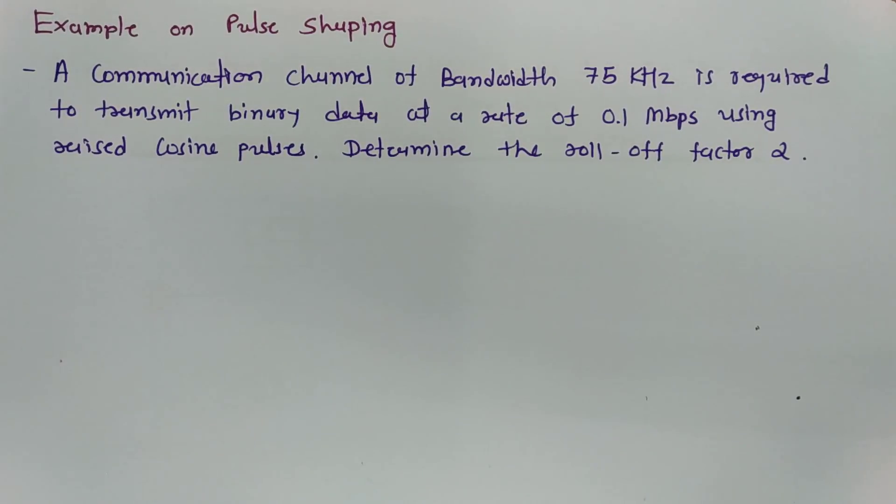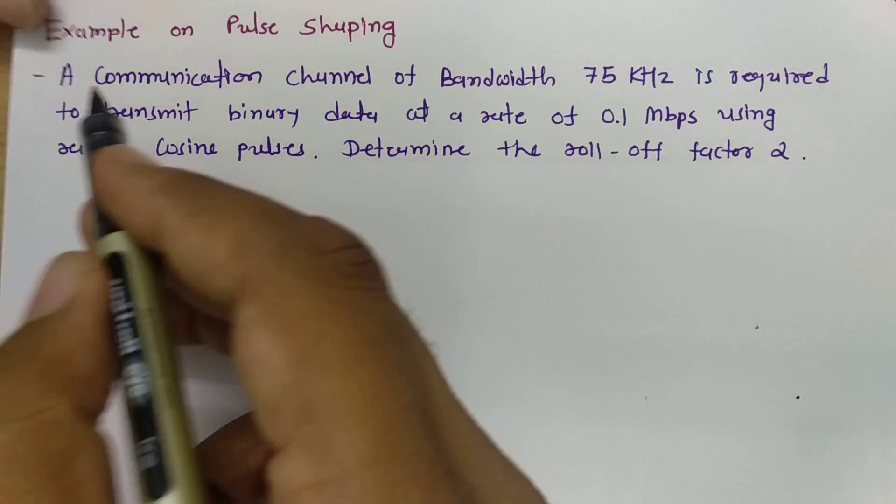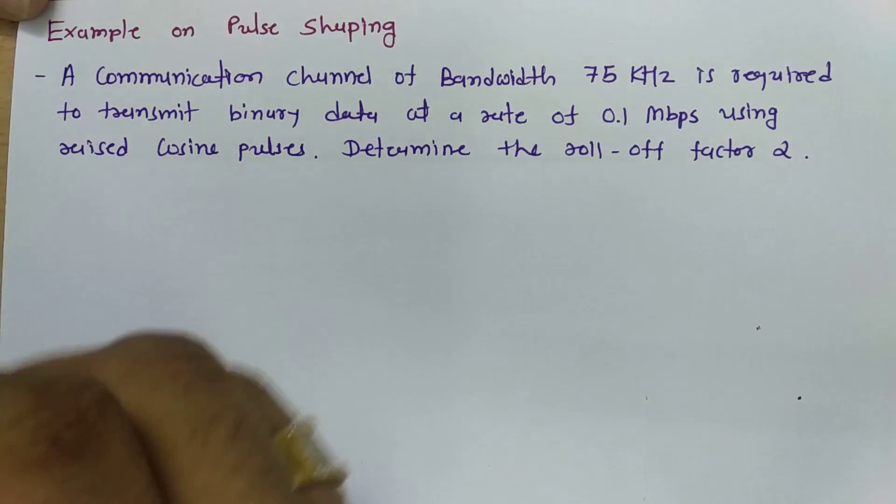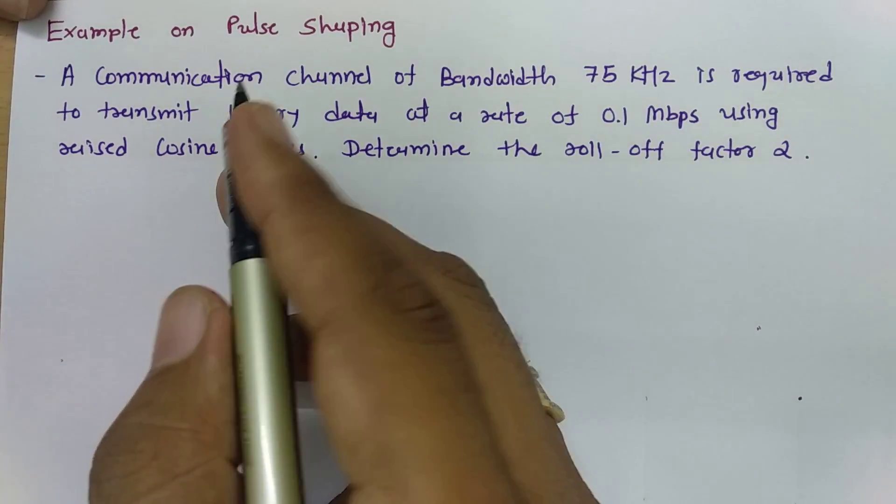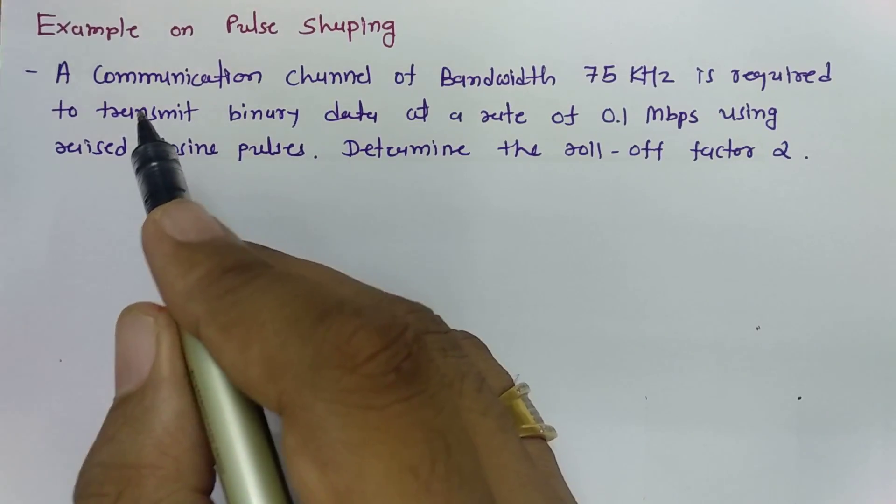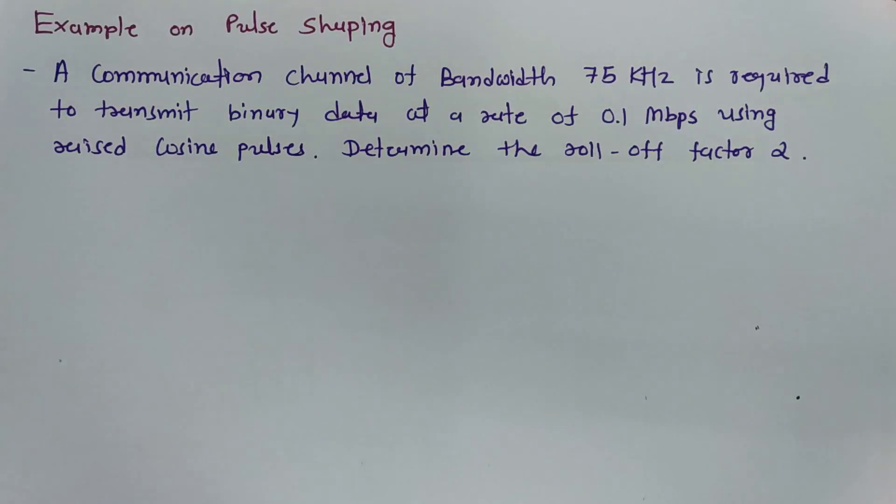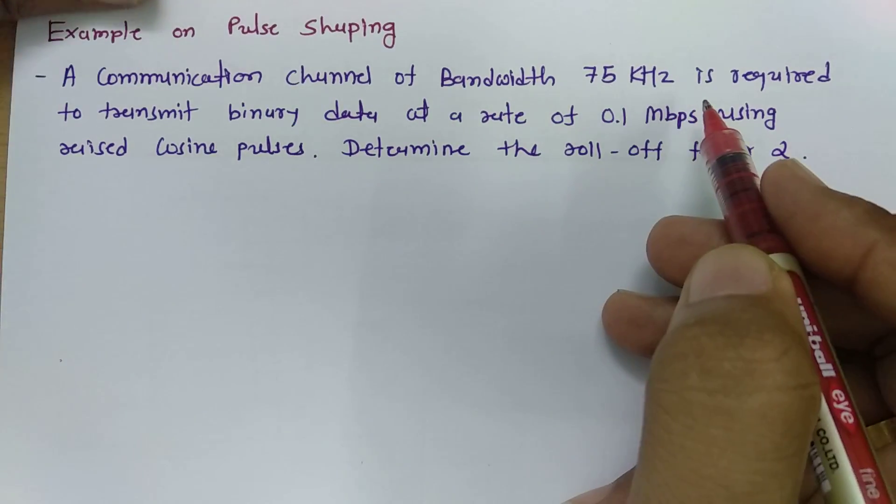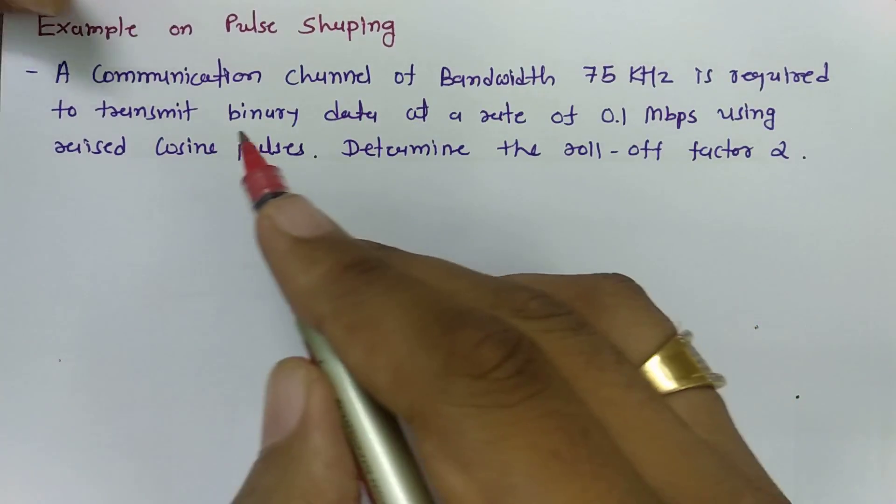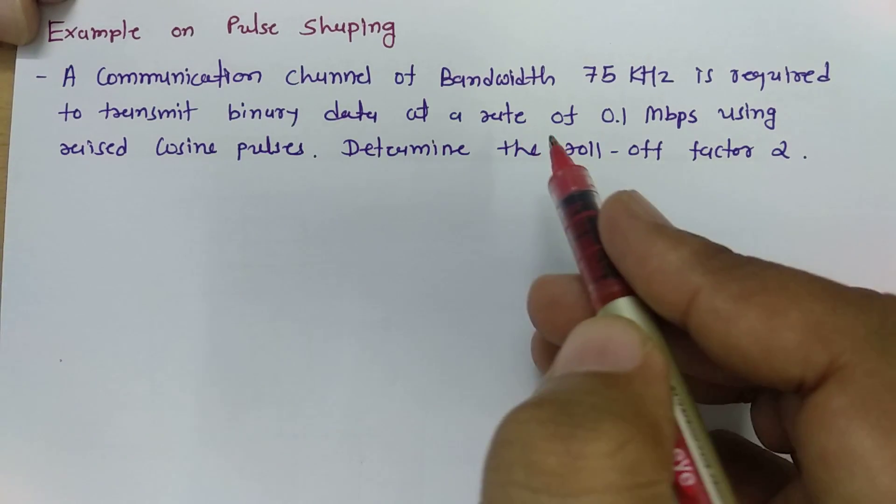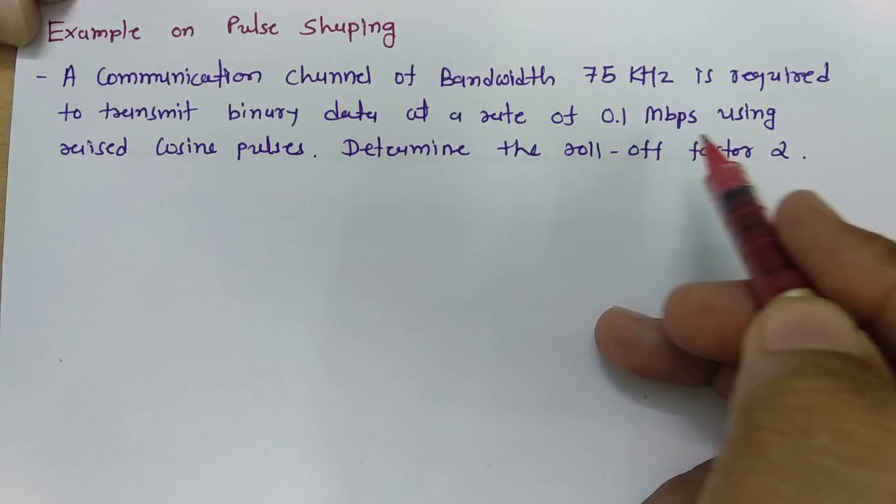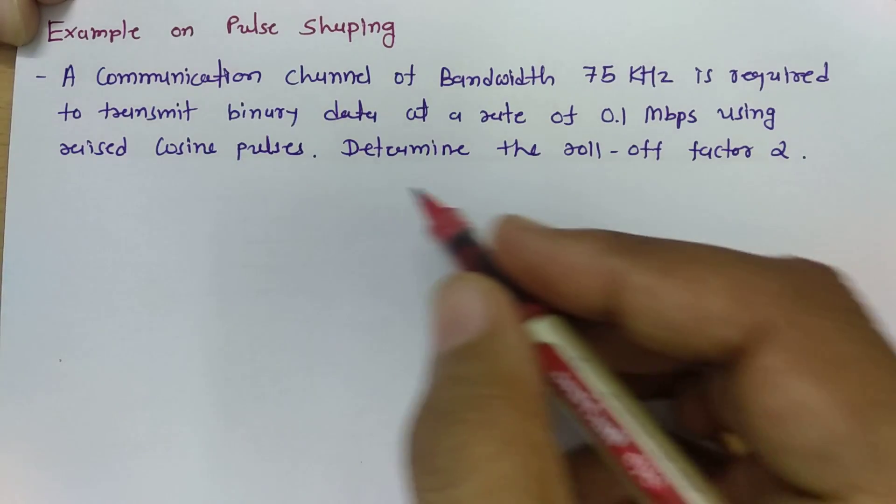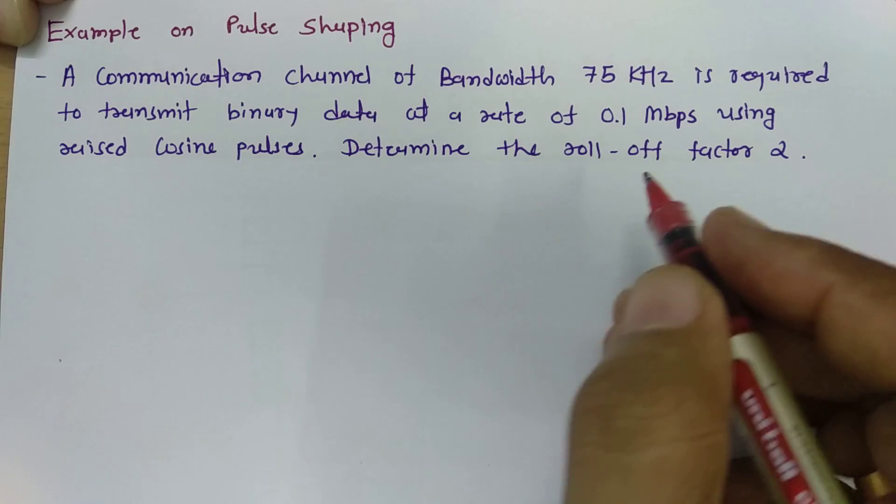Welcome to digital communication playlist. Here in this session I'll be going to explain pulse shaping example. So let us begin this session with one problem where a communication channel of bandwidth 75 kilohertz is required to transmit binary data at the rate of 0.1 Mbps using raised cosine pulses. Determine the roll-off factor alpha.